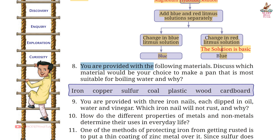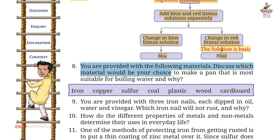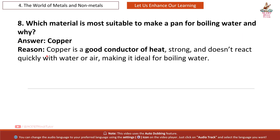Question 8: You are provided with several materials — which would be your choice to make a pan most suitable for boiling water and why? Answer: Copper. Reason: Copper is a good conductor of heat, strong, and doesn't react quickly with water or air, making it ideal for boiling water.